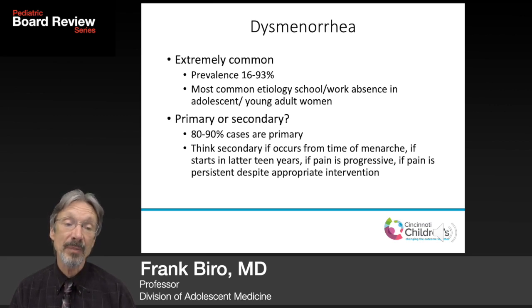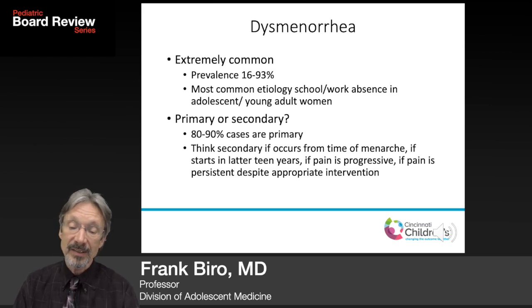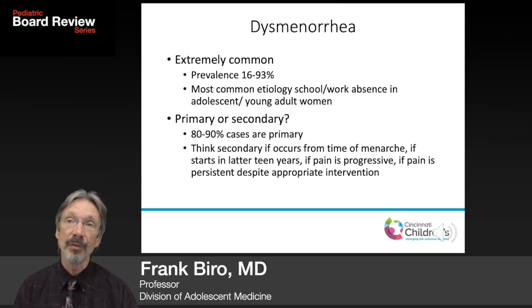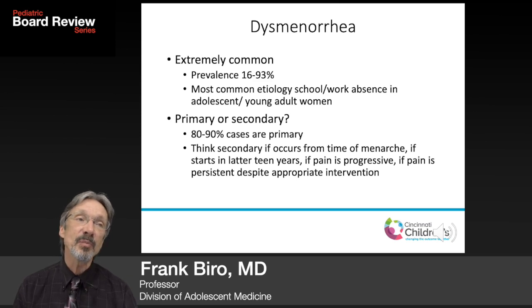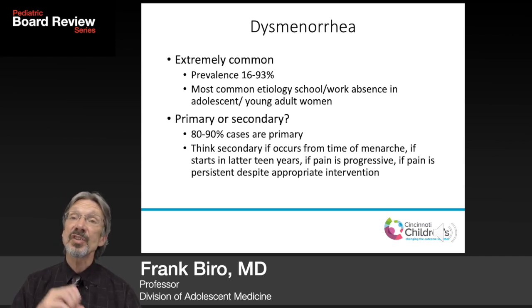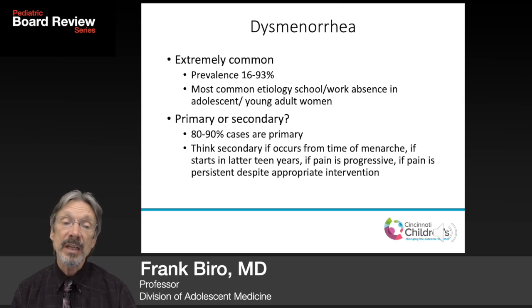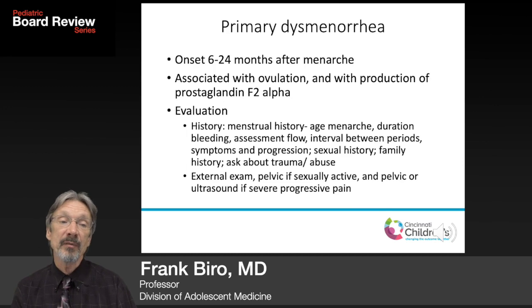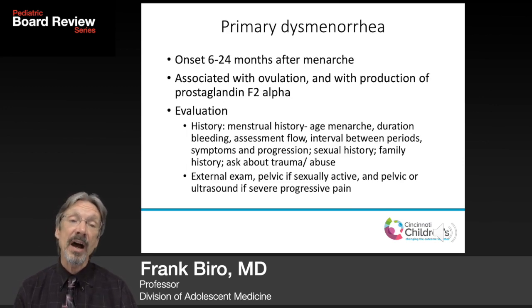Primary dysmenorrhea is the production of prostaglandins leading to cramping of uterine musculature. You need to think about secondary causes if dysmenorrhea starts right at the time of menarche, or if it starts several years after menarche, if the pain becomes progressive, or if pain persists despite appropriate intervention.